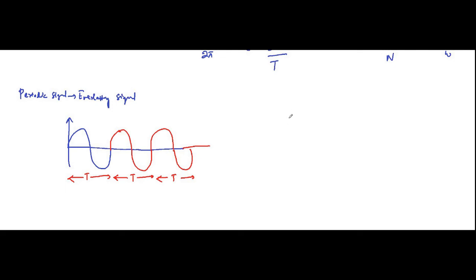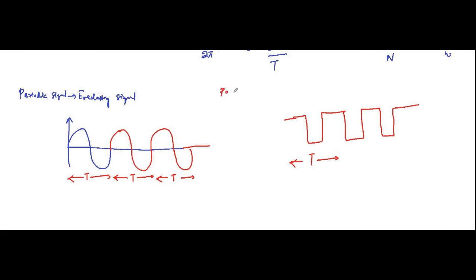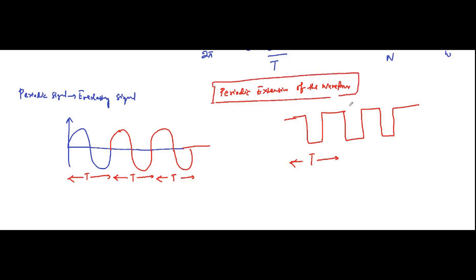In periodic signals, if we are given the shape of the waveform for any one time period, we can reconstruct the signal by repeating that waveform for all future time periods of the same duration. This is called periodic extension of the waveform. This is possible because a periodic signal repeats itself after fixed intervals of time T, so we use that property to reproduce the same pattern after every T seconds to reconstruct the original signal.